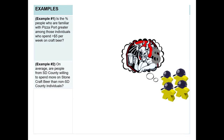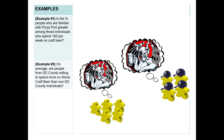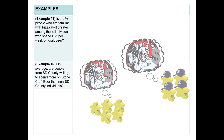In our second example, we'll simply ask if, on average, people from San Diego County are willing to spend more on Stone craft beer than non-San Diego County individuals. This is very similar to example one, where we clearly can separate people into two different categories. The difference here is we're not comparing percentages between a variable, but rather we're comparing an average.